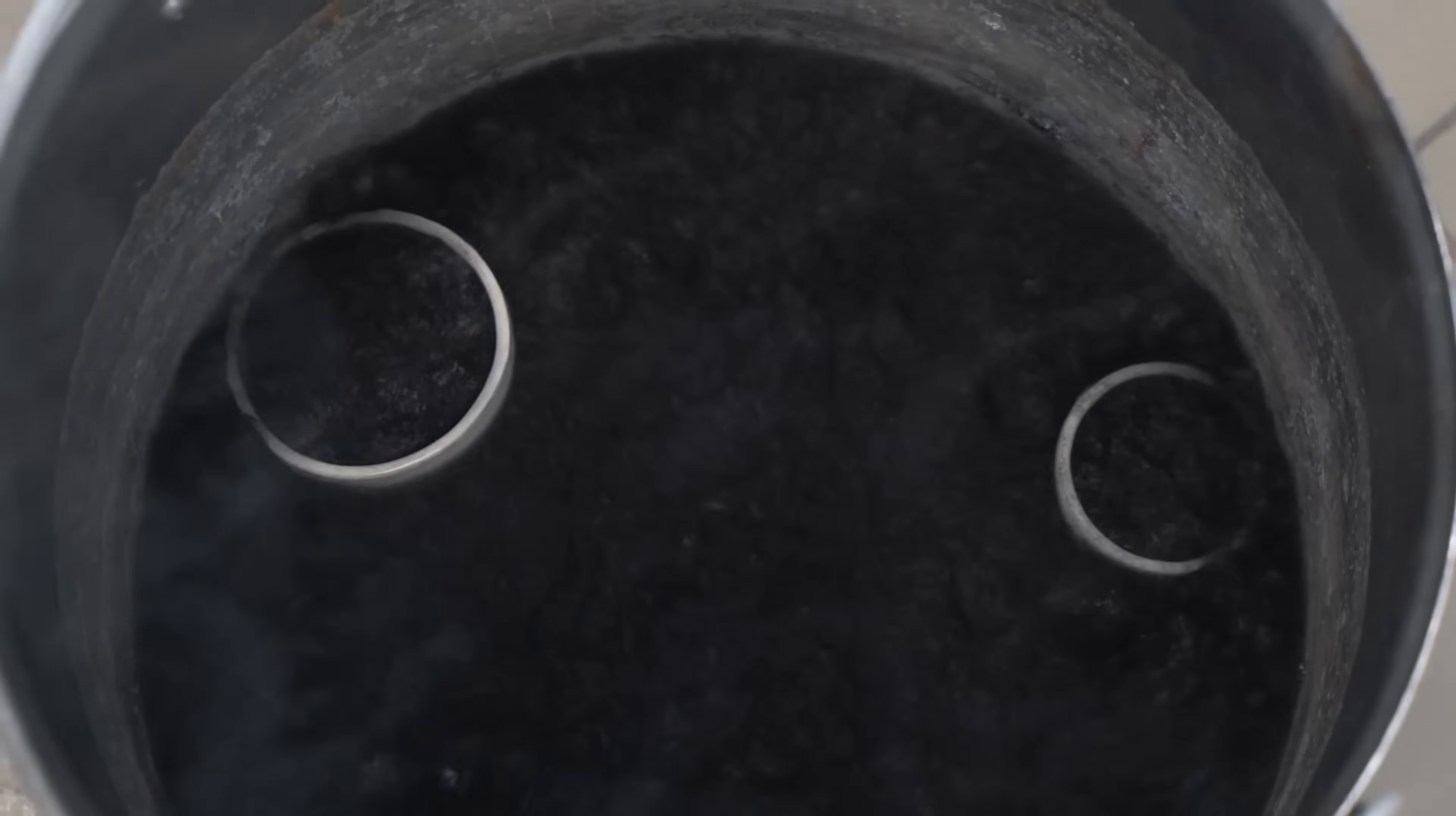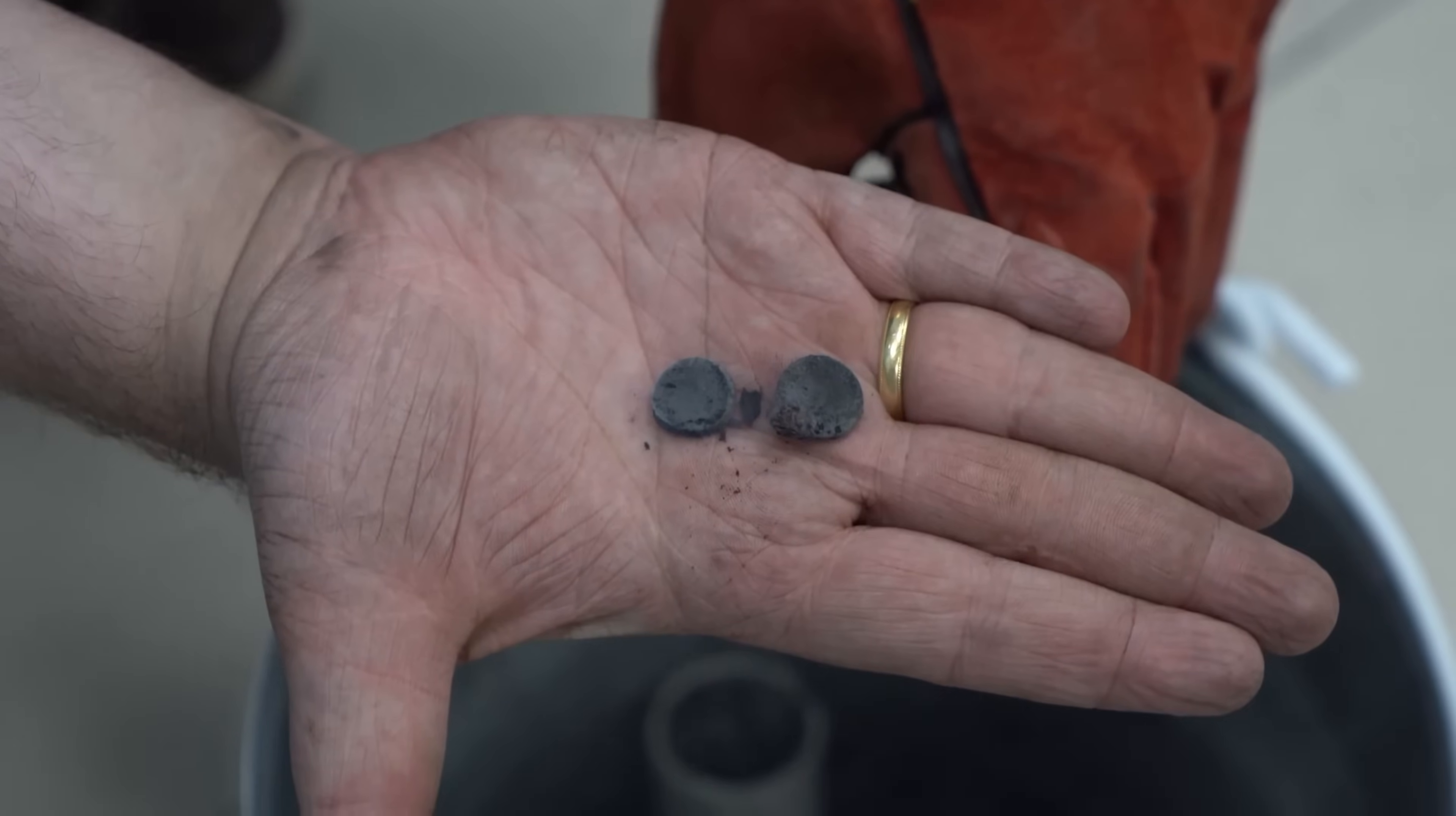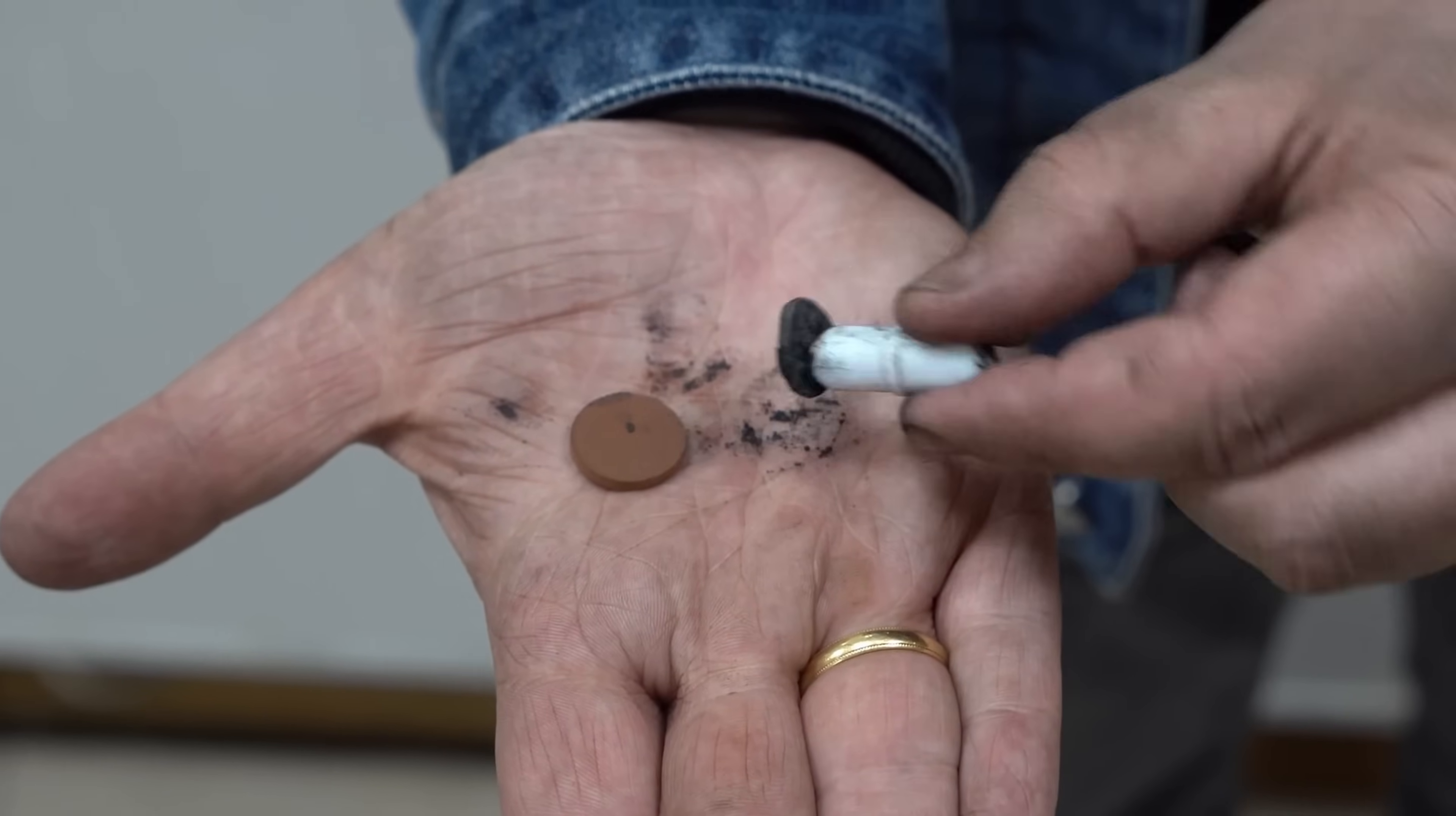After the crucibles have cooled down, we can check what the red sludge tablets have turned into. As you can see, they turned black, due to the fact that the carbon allowed the iron in their composition to reduce to a metallic state. It's easy to check with a small magnet. The difference is obvious. Even the first stage shows that it's possible to obtain metallic iron from the residual red mud.